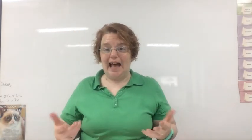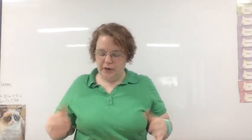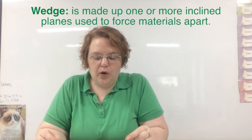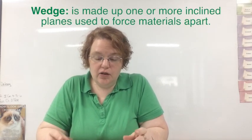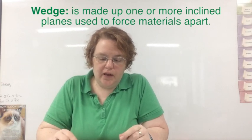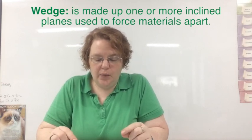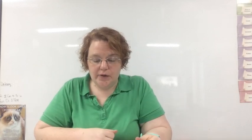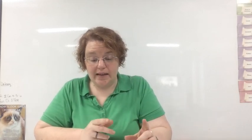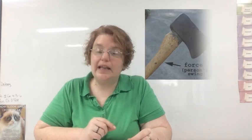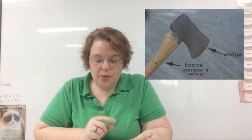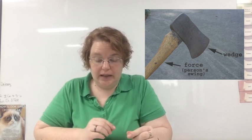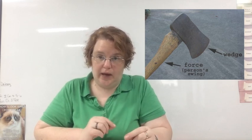And let's talk about the last simple machine on page 89. A wedge is made up of one or more inclined planes used to force materials apart. The inclined planes in a wedge form a pointed end. Many common tools use a wedge. An axe used to cut wood is a wedge. The pointed edge splits the wood much more easily than a blunt object would. The blade of a kitchen knife is also a wedge.